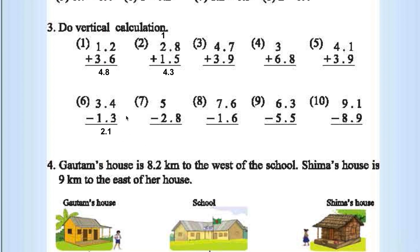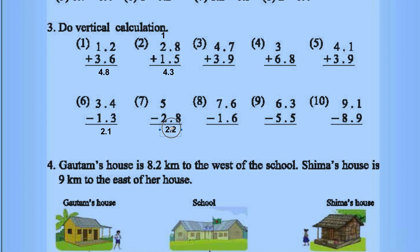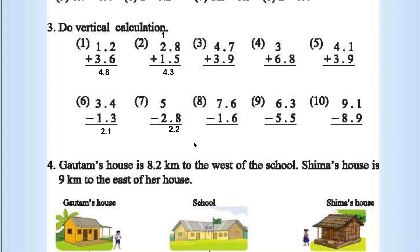What about this one? 50 minus 28 is 22, so the answer is 2.2. This one is 6.0. Here we get 5, then 8, so 0.8. And this one: 11 minus 9 is 2, so the answer is 0.2.